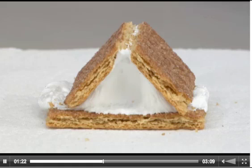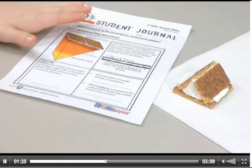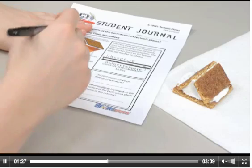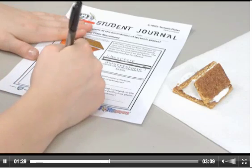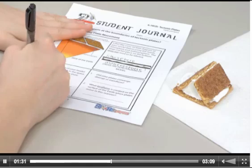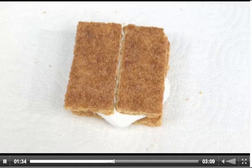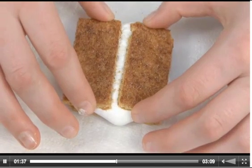Draw a cross-sectional diagram of the model under Figure 1 in the student journal and answer the corresponding questions. Next, model a divergent boundary by pushing the two small crackers apart so they are slightly separated.